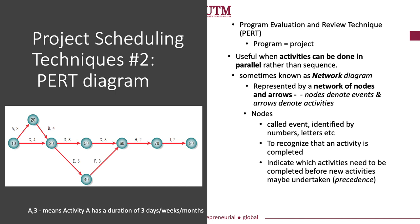A project has a beginning, a middle, and the end. In the figure, the beginning is event 10 and the end is event 80. To recap, using the Gantt Chart technique, the activities are represented using bars. However, in the PERT diagram, the arrow between one node to another represents the planned activities.